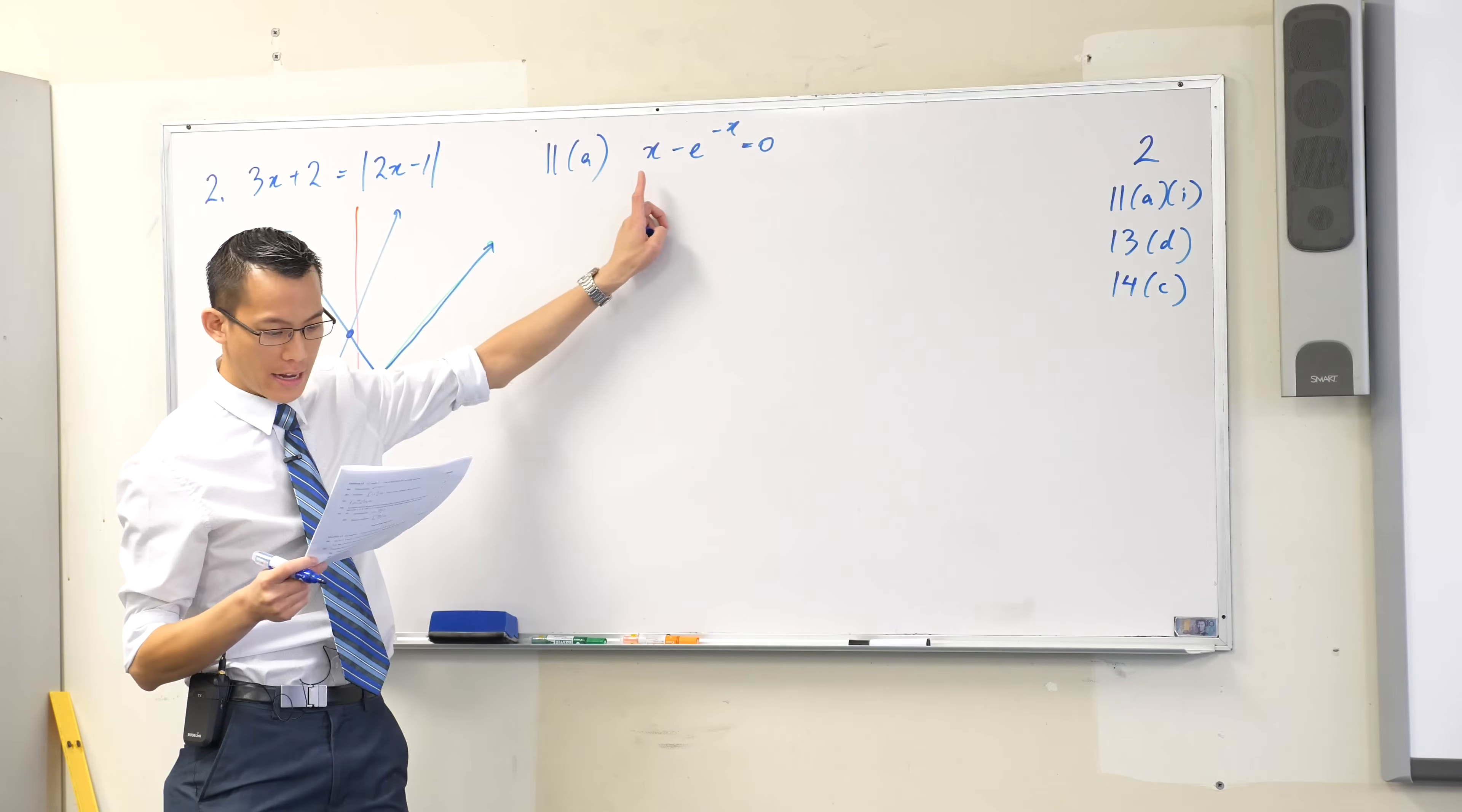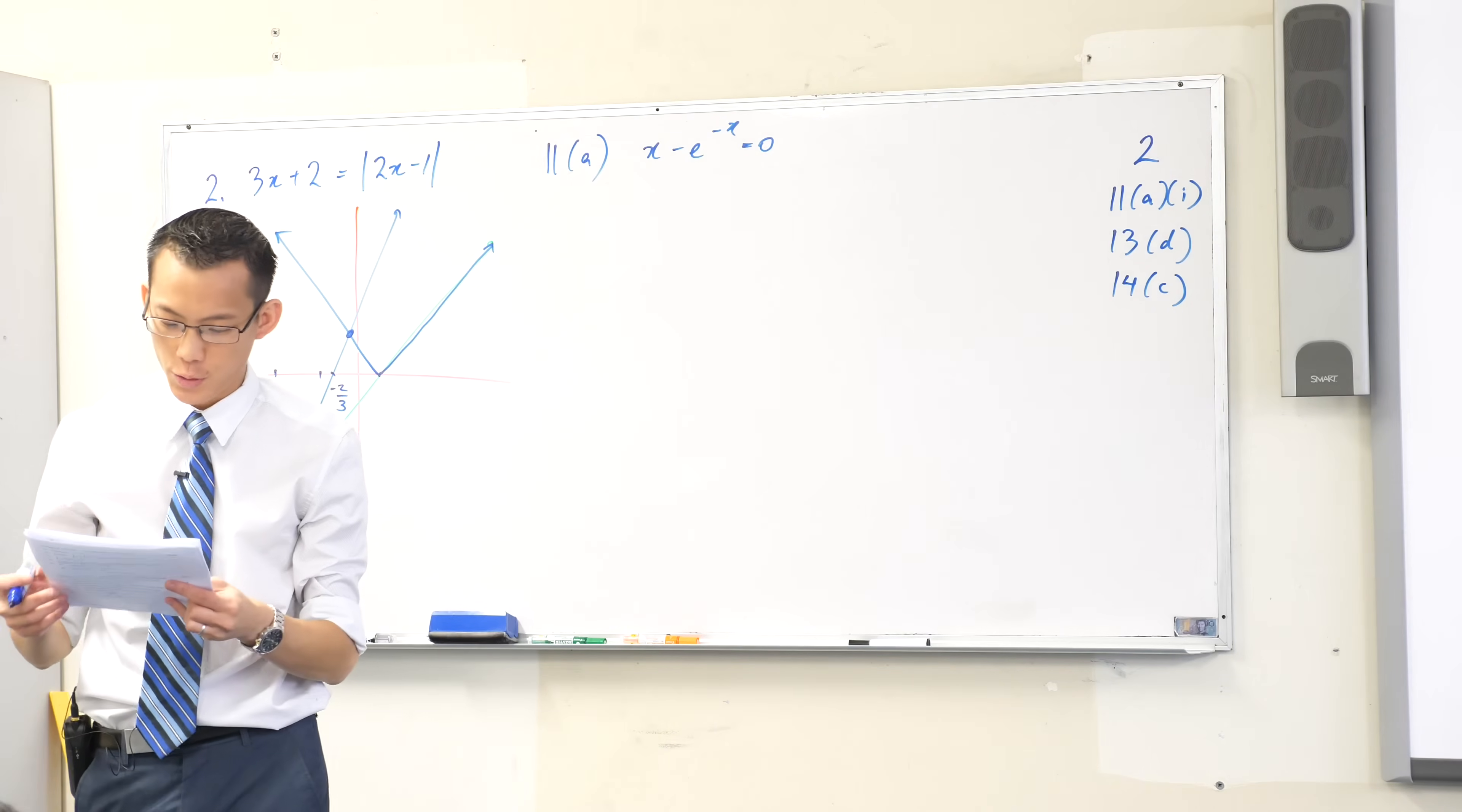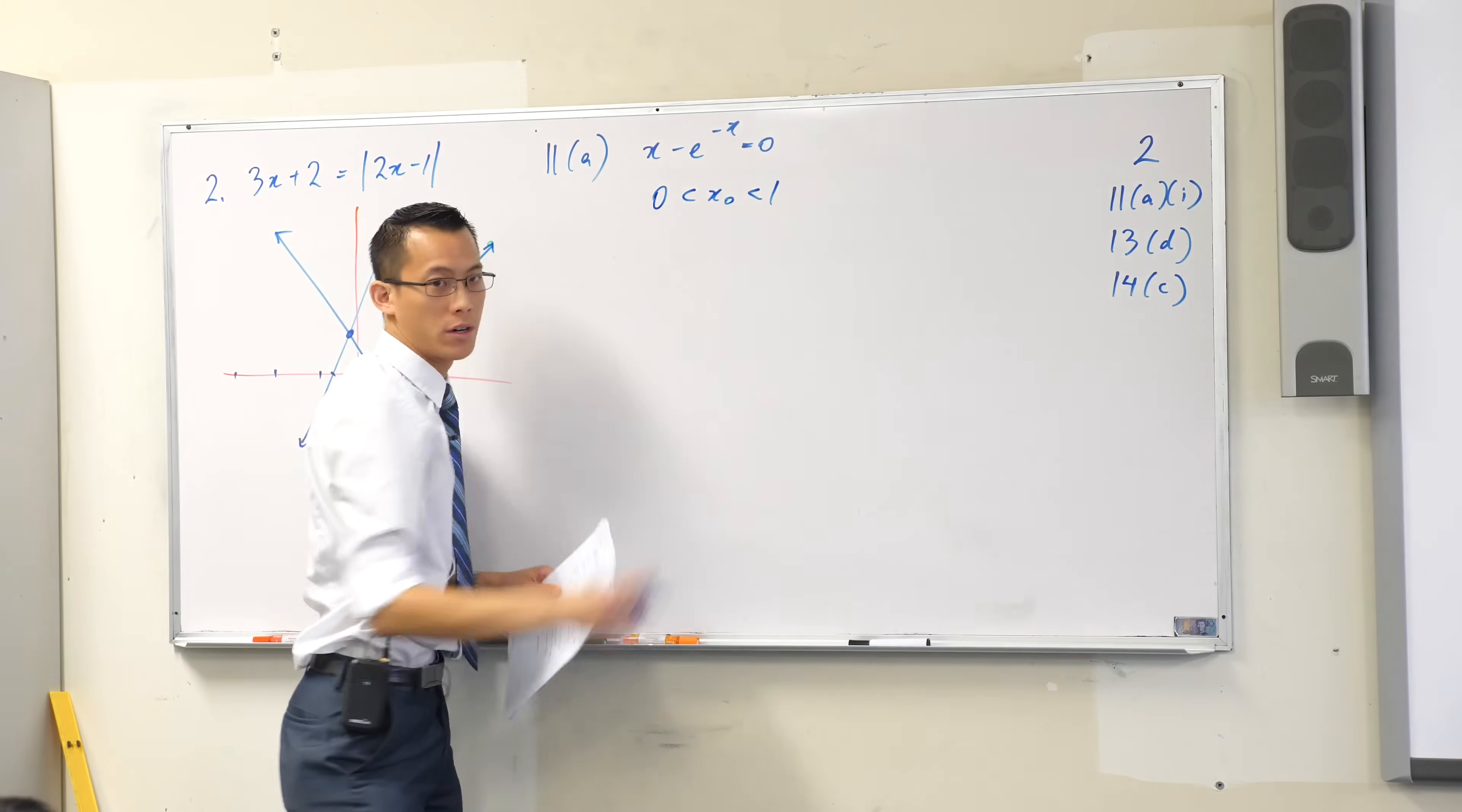Show that the equation x minus e to the negative x equals zero has exactly one root, and that this root, x naught, satisfies this inequality: zero less than x naught less than one.